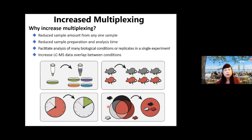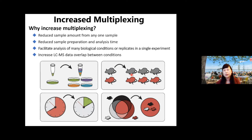There is great motivation to increase multiplexing and throughput. Higher multiplexing reduces sample amount from any single sample, reduces sample preparation and analysis time — especially if you're charged by instrument time — and improves LC-MS data overlap. Most importantly, multiplexing allows you to look at a large number of biological conditions or replicates in a single experiment, such as screening multiple cell culture conditions, different drug treatments, or large cohorts of clinical specimens.